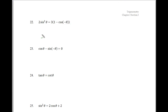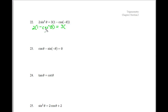One of the strategies in problem 22 is that we see we have sine squared theta and also cosine. Knowing the trig identity that sine squared theta is equal to 1 minus cosine squared theta, we now have the entire problem in terms of cosine. This helps us because now we're down to one kind of trig function. This comes from the identity: sine squared theta plus cosine squared theta equals 1.